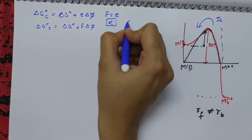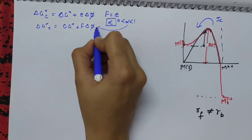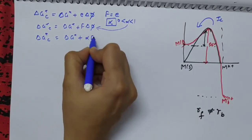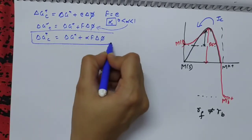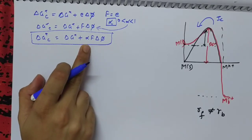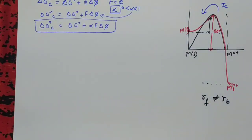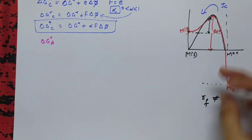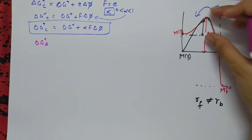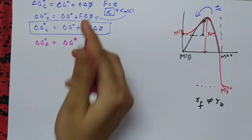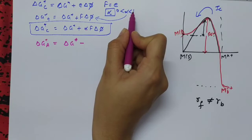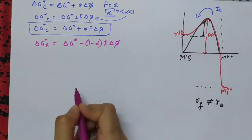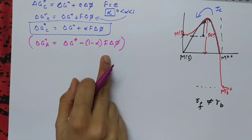So ΔGc* = ΔG* + α×F×Δφ — this is for the non-equilibrium condition. Similarly, for the anodic process (solid converting to M^(n+)), the energy decreases, so: ΔGa* = ΔG* − (1−α)×F×Δφ, because the maximum value of α is 1, so the anodic coefficient is (1−α), and the work done is F×Δφ.